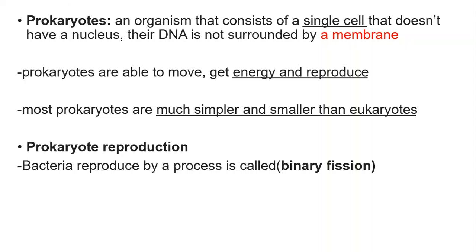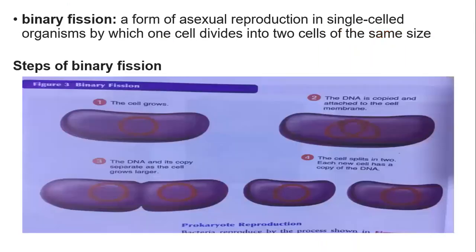How do prokaryotes reproduce? Prokaryotes reproduction — for example, like bacteria — bacteria reproduce by a process called binary fission. Binary fission is a form of asexual reproduction in single-cell organisms by which one cell divides into two cells of the same size.